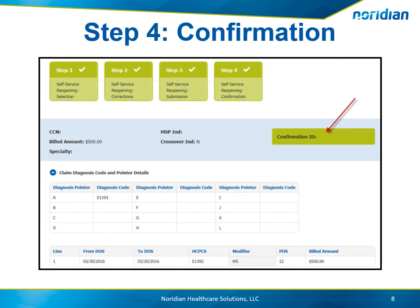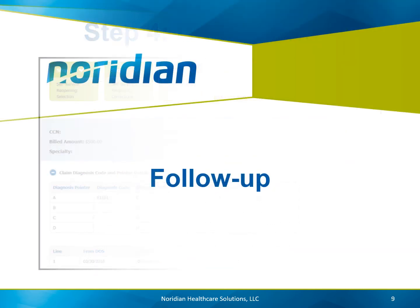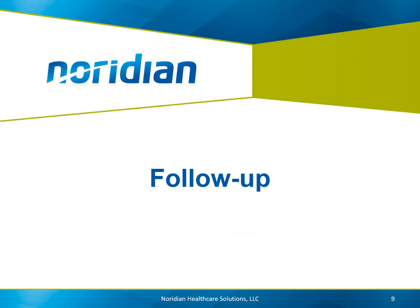Step 4 provides the confirmation ID number. This indicates the reopening was submitted and will be processed. Once the reopening has been submitted, providers are able to view the adjusted claim in the portal.